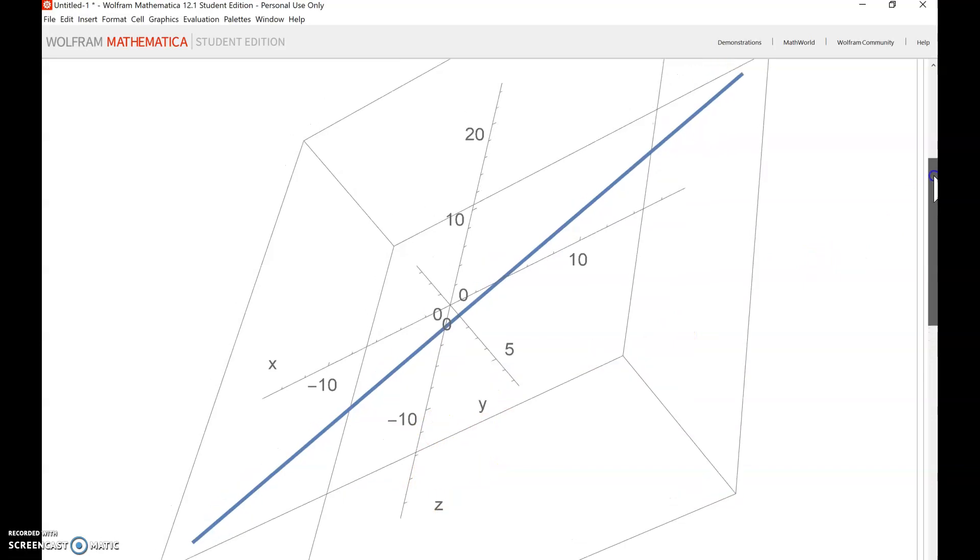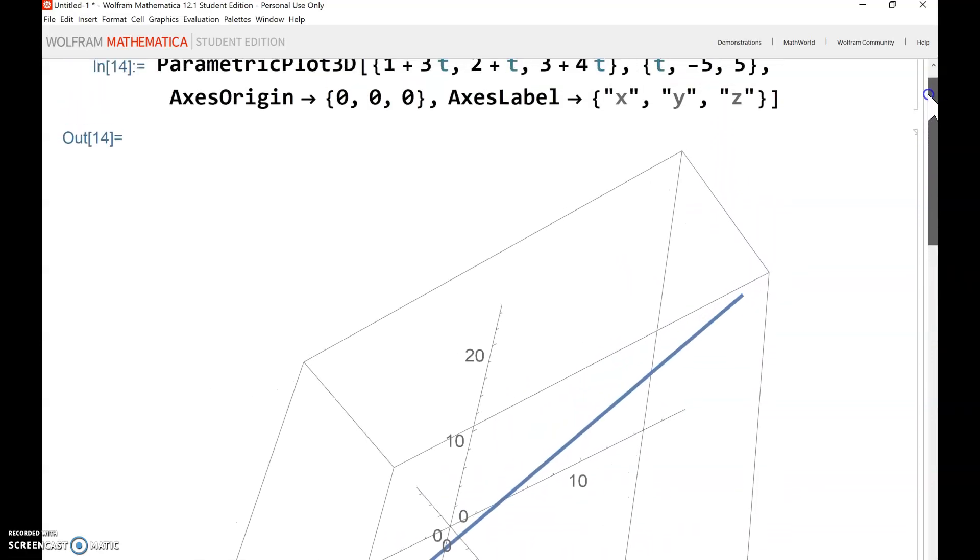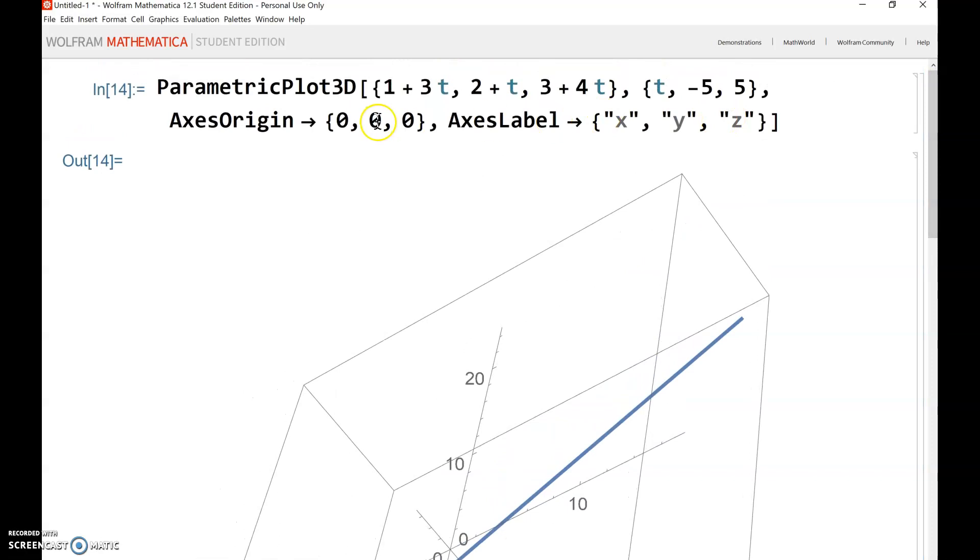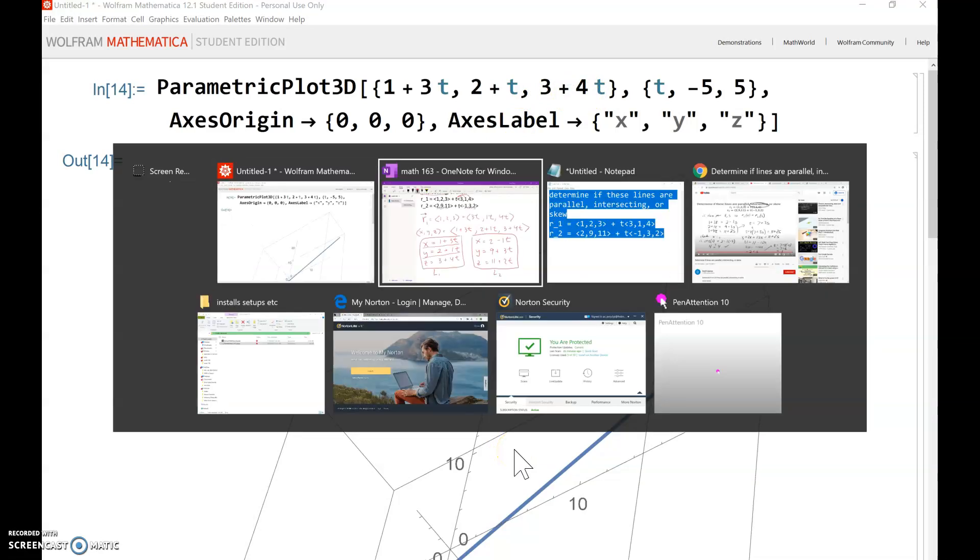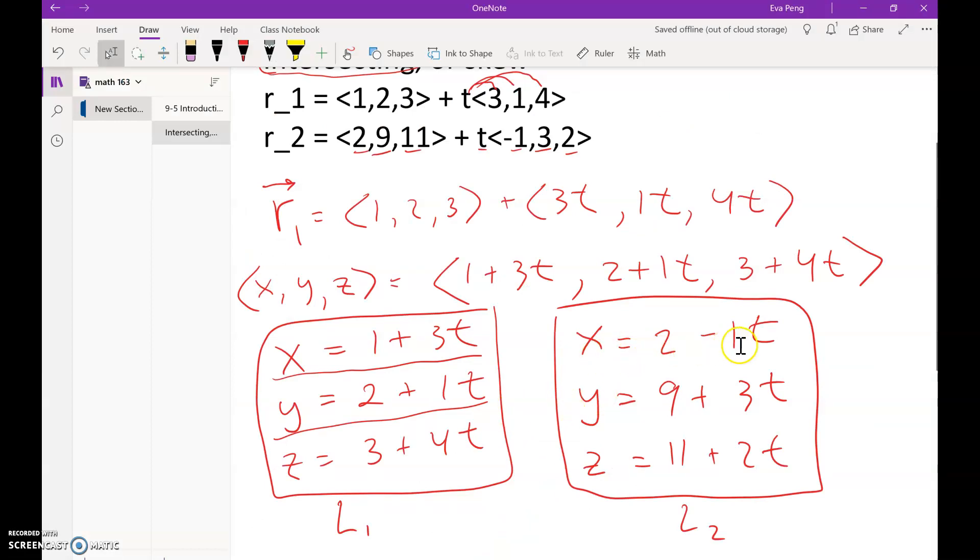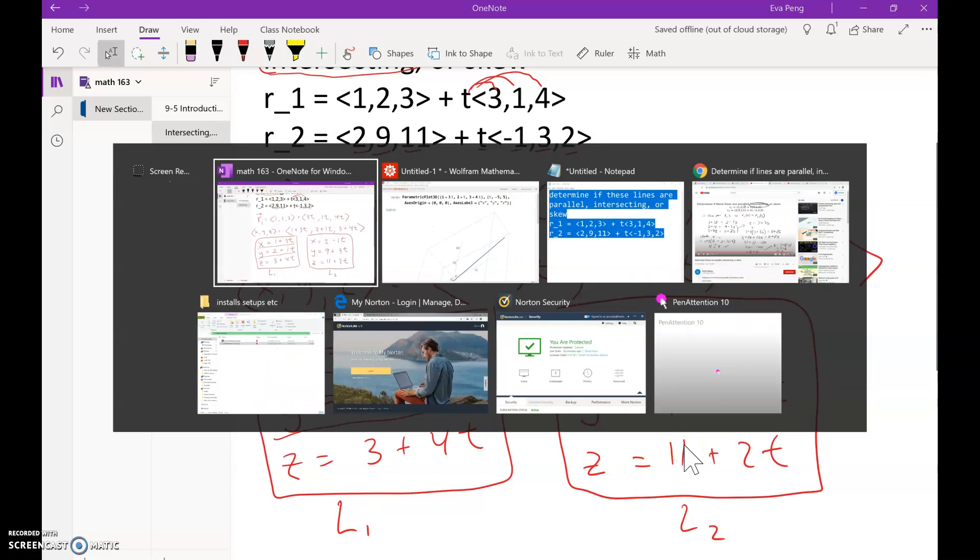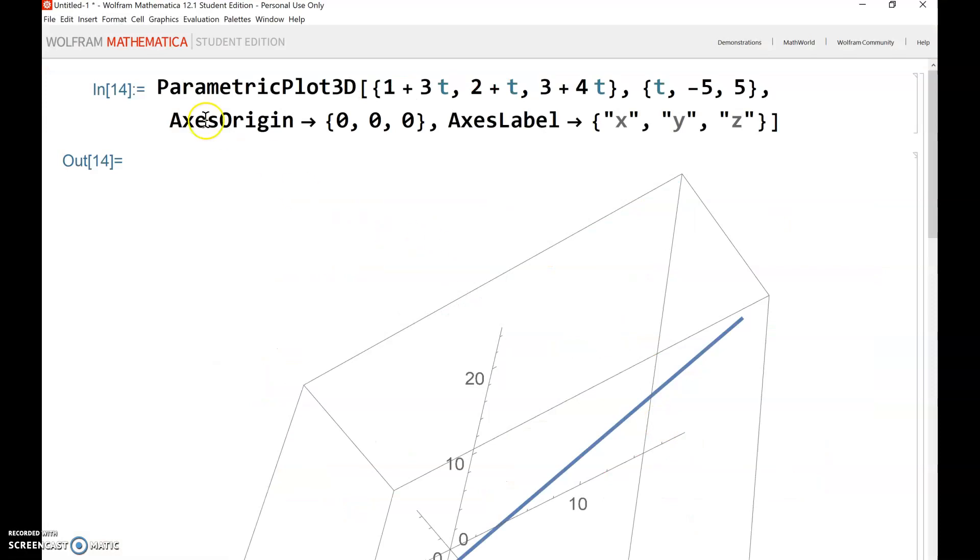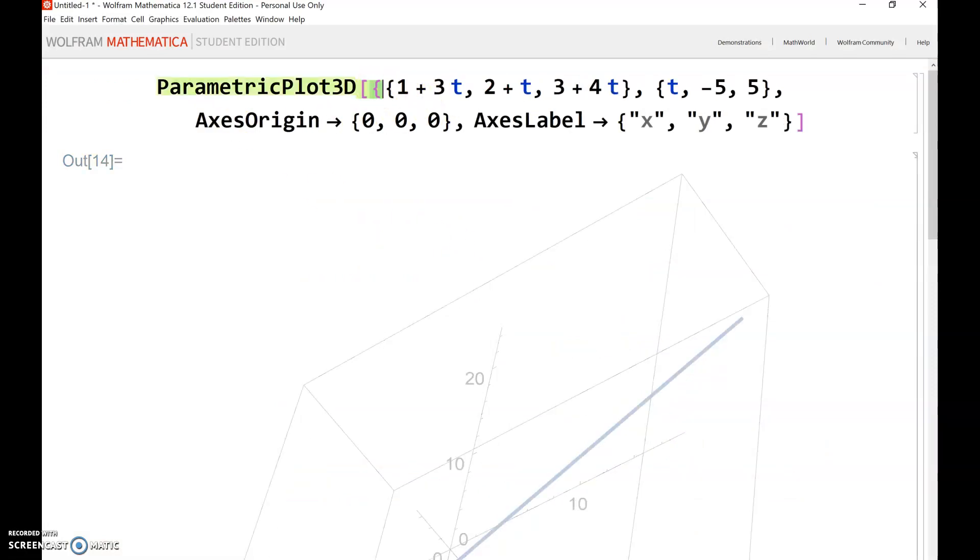Now how do you graph two lines at once? Anytime you want to graph two things at once, just put them in another set of curly brackets. So the second line, let's go back here, was x=2-t, y=9+3t, z=11+2t, so let's just type that in. Back to our ParametricPlot3D here, so just add another set of brackets, so it's think of it like a list of lists.